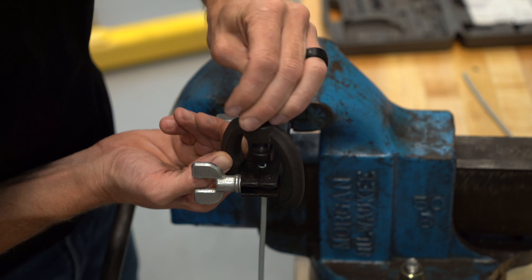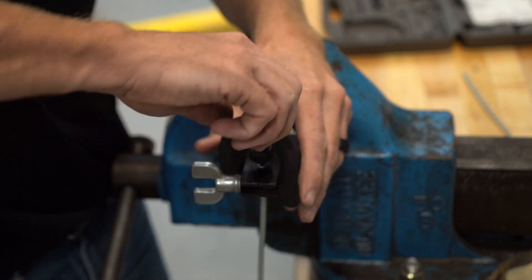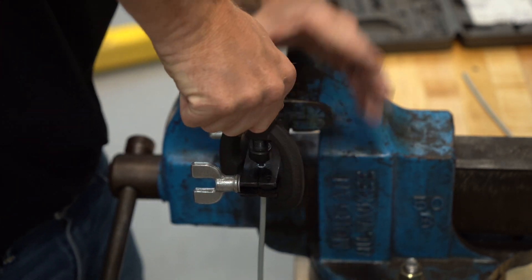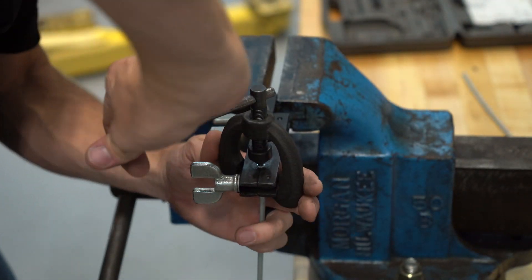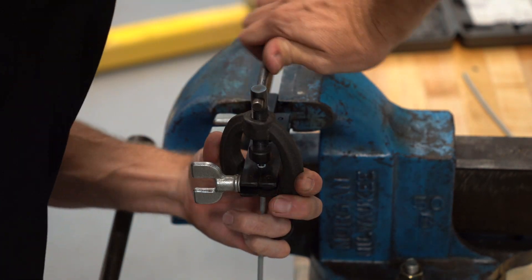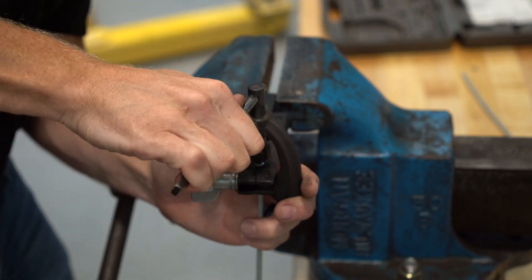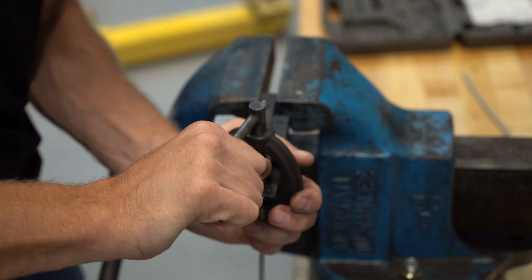Make sure the cone centers up with the center of the brake line there. Make that snug and we'll crank this down a little bit. And that's nice and snug.